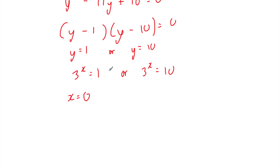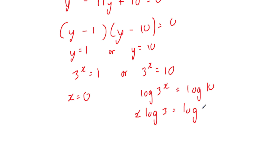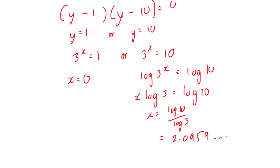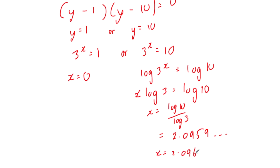Alternatively you could take the logs of both sides: log 1 divided by log 3 also equals 0. For the second solution, 3 to the power of x equals 10 — take logs of both sides: log of 3 to the power of x equals log 10. Bring the x down: x times log 3 equals log 10. Dividing by log 3: x equals log 10 divided by log 3 equals 2.0959... which rounds to 2.096 to three decimal places. So x equals 0 or x equals 2.096 to three decimal places.